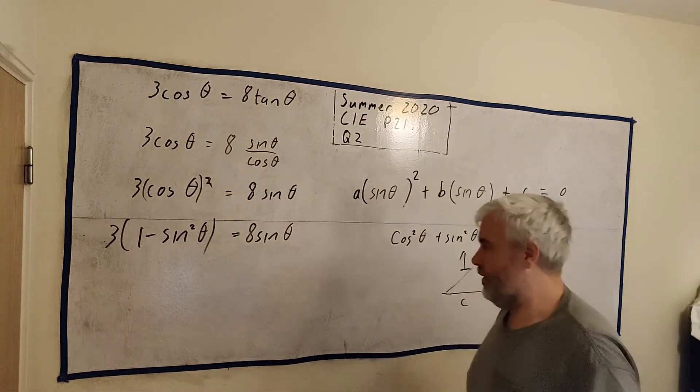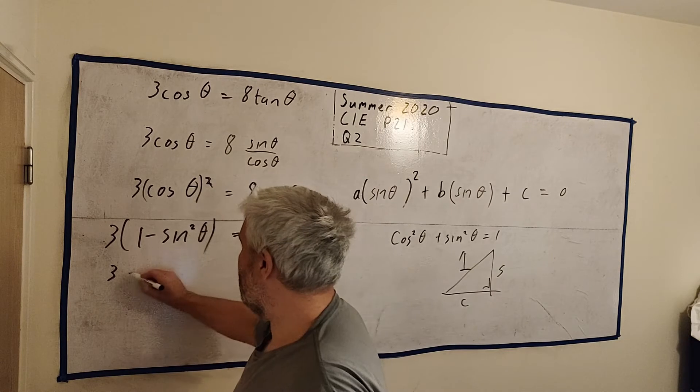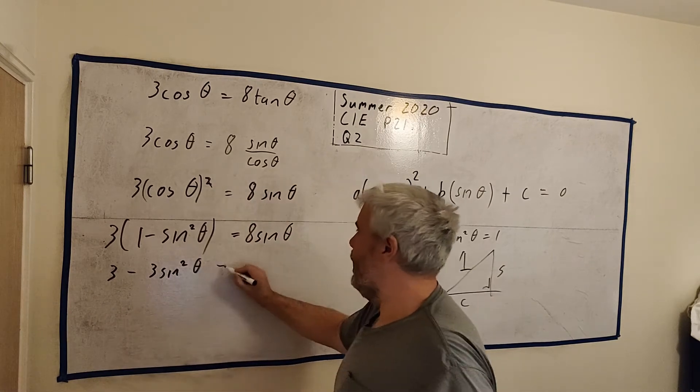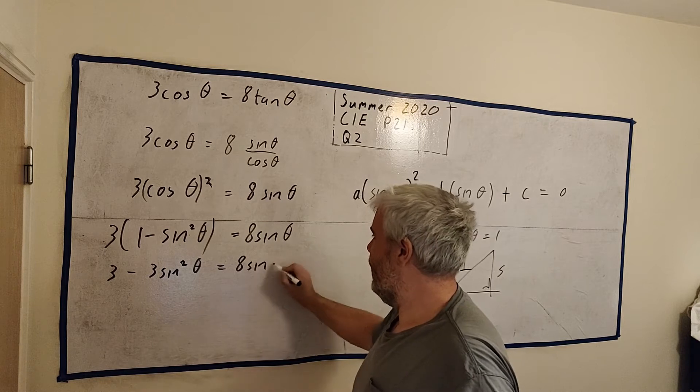So instead of writing cosine squared, we can write cosine squared is equal to 1 minus sine squared. 1 minus sine squared theta equals 8 sine theta. So instead of cosine, it is equal to 1 minus this. And we're nearly finished. We have a sine squared, we have a sine, we have numbers. Let's just multiply this out a bit. We get 3 minus 3 sine squared theta is equal to 8 sine theta.